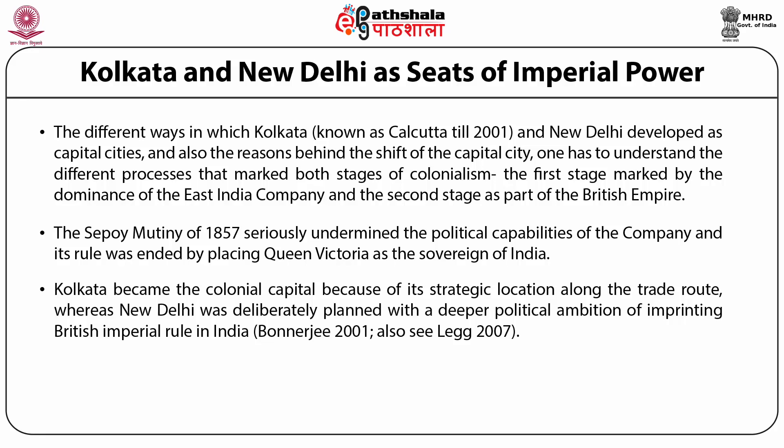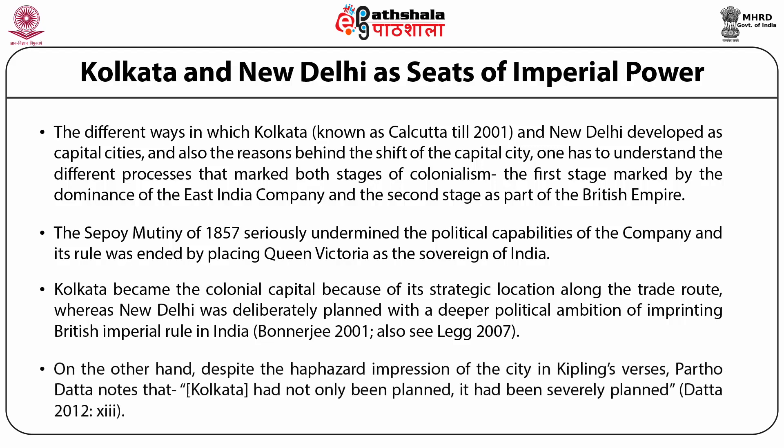On one hand, as Rudyard Kipling described Kolkata: 'chance directed, chance erected, laid and built on the silt, palace, hovel, poverty and pride side by side.' On the other hand, despite the haphazard impression of the city in Kipling's verse, Partho Datta notes that Kolkata had not only been planned, it had been severely planned. Both viewpoints reflect different aspects of urban development in Kolkata during colonial times.